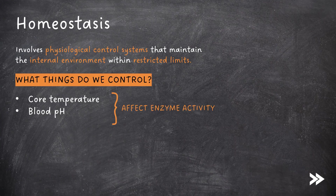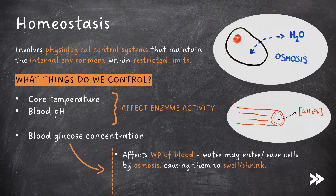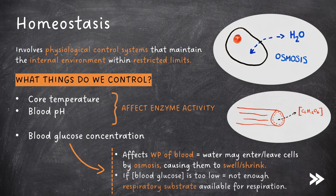Other things which we control include the blood glucose concentration. This affects the water potential of the blood, meaning that water may either enter or leave cells by osmosis, causing them to swell or shrink. Also, if the concentration of blood glucose is too low, not enough respiratory substrate is available for respiration.